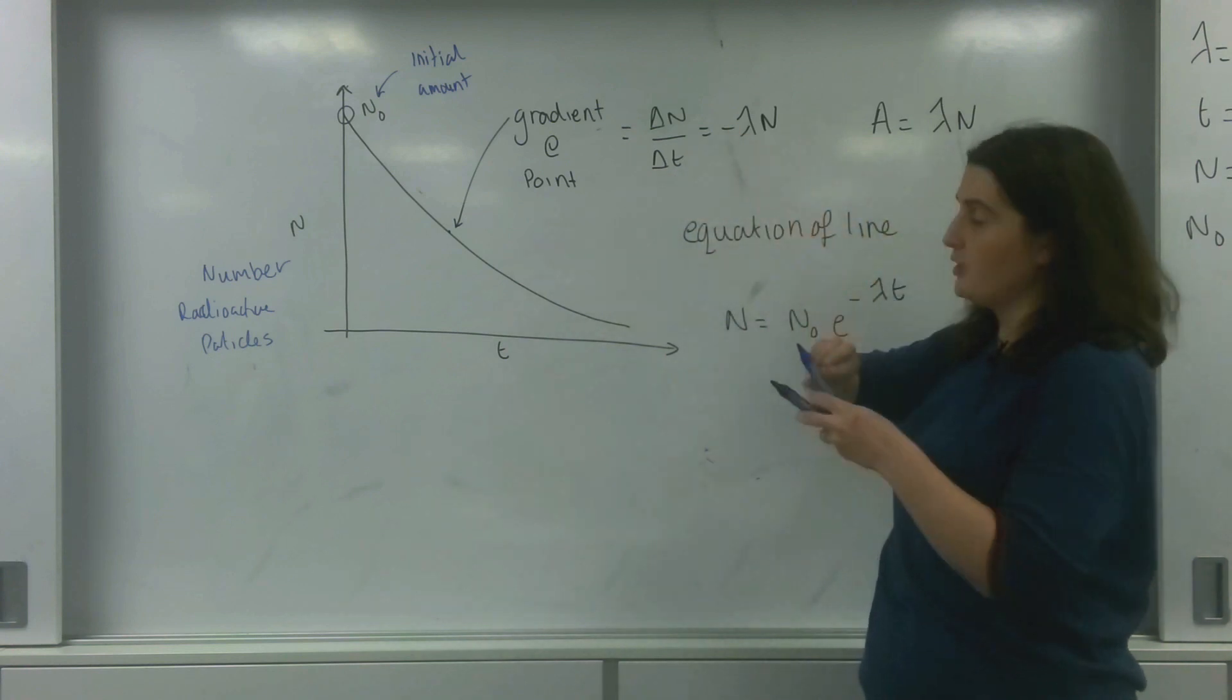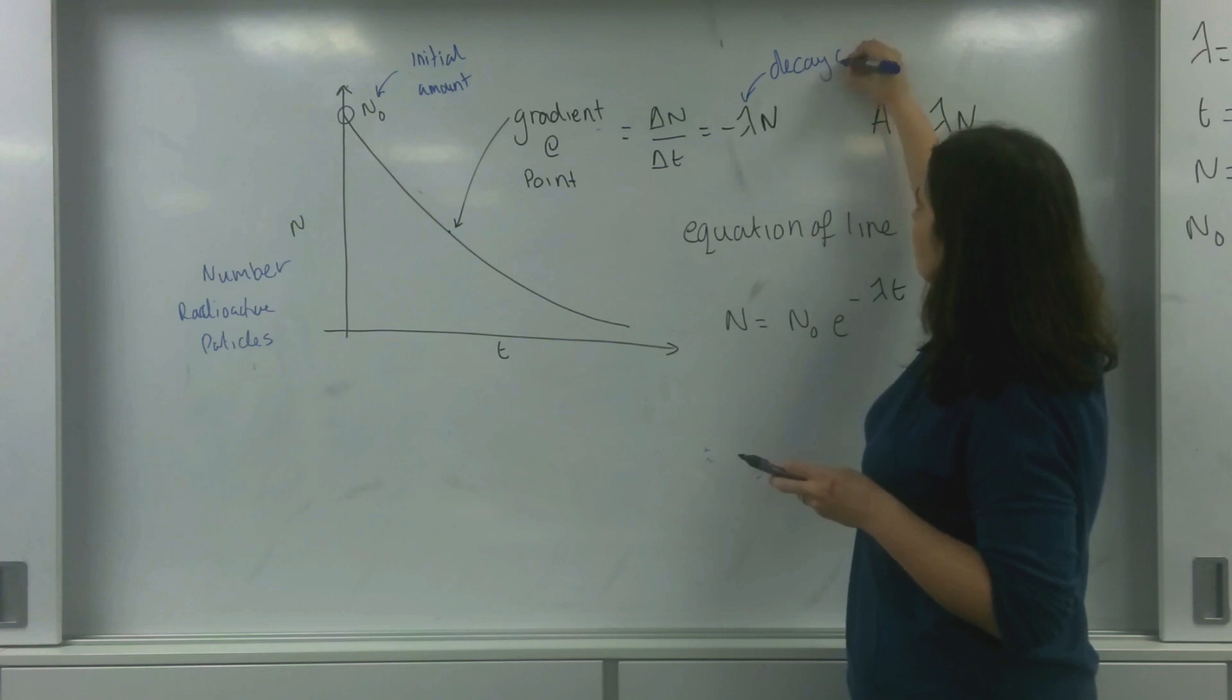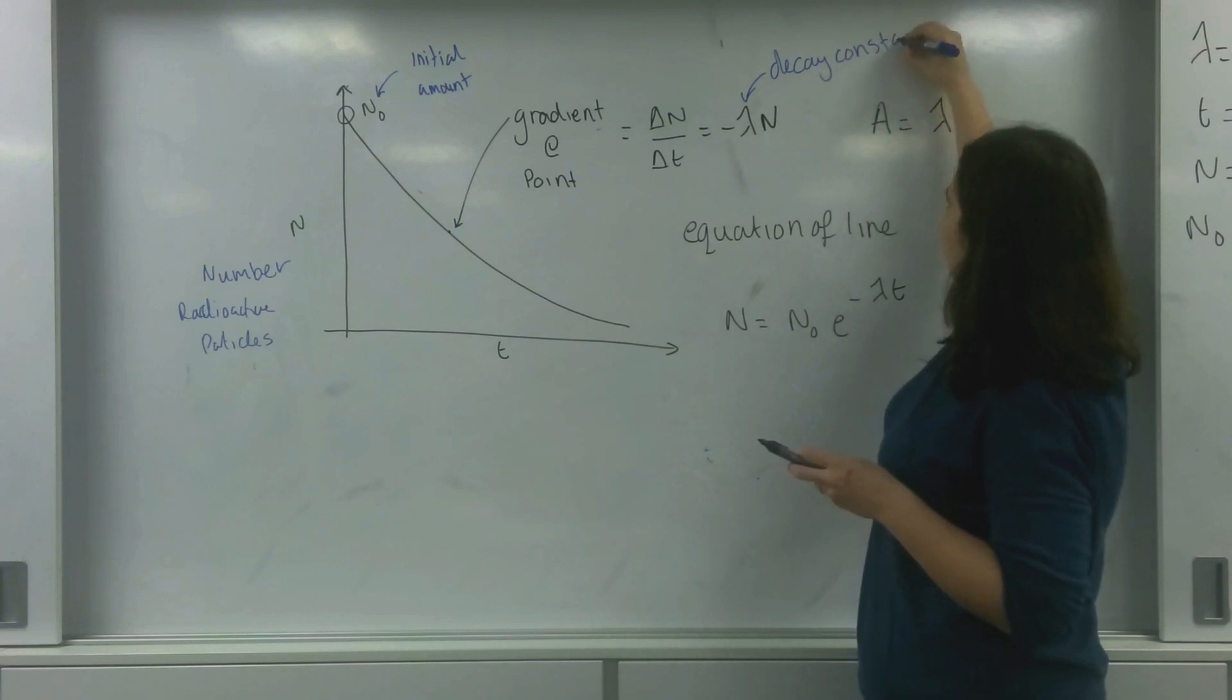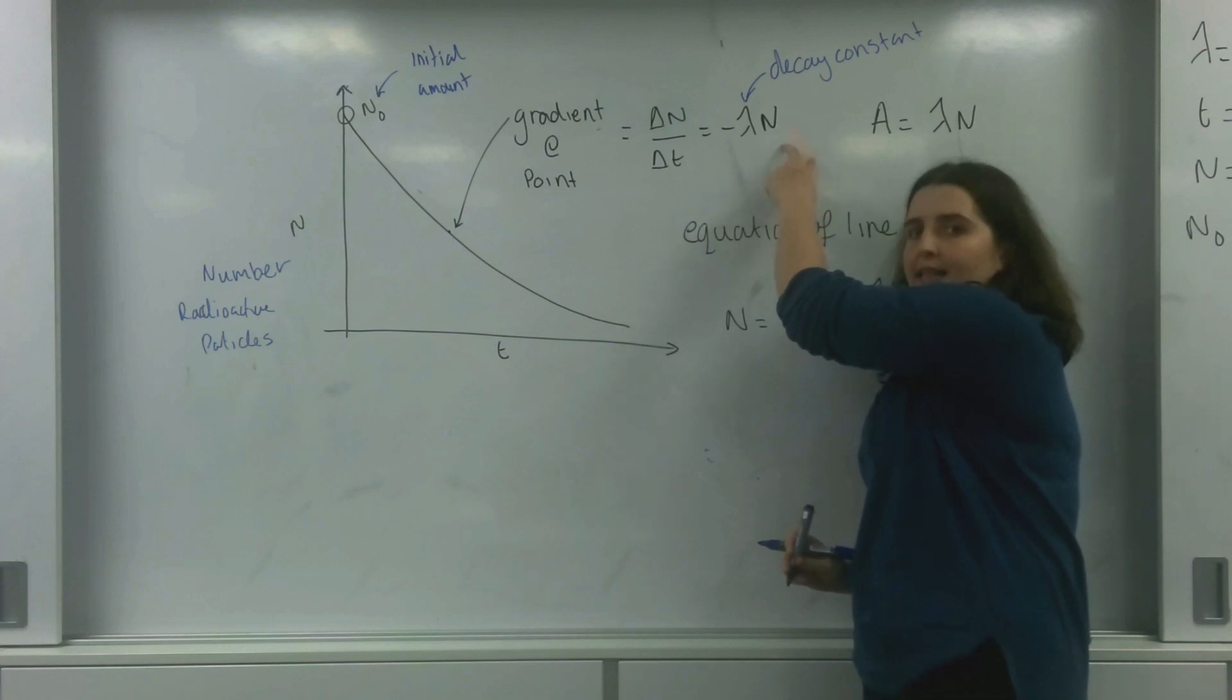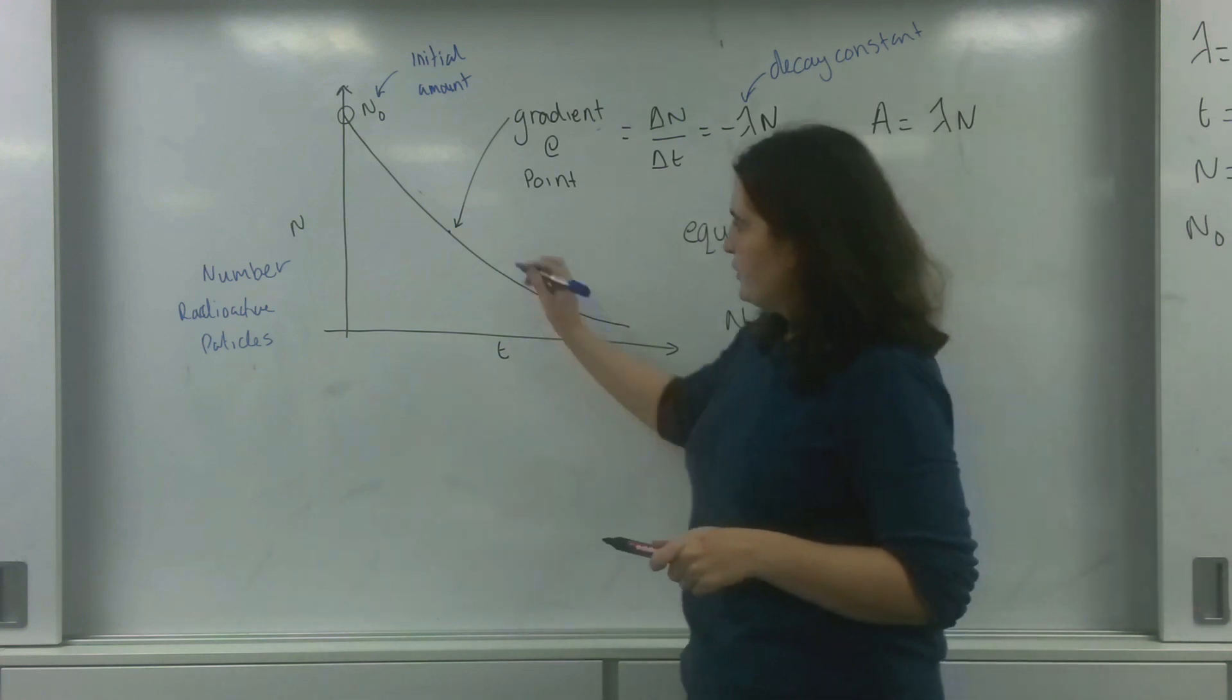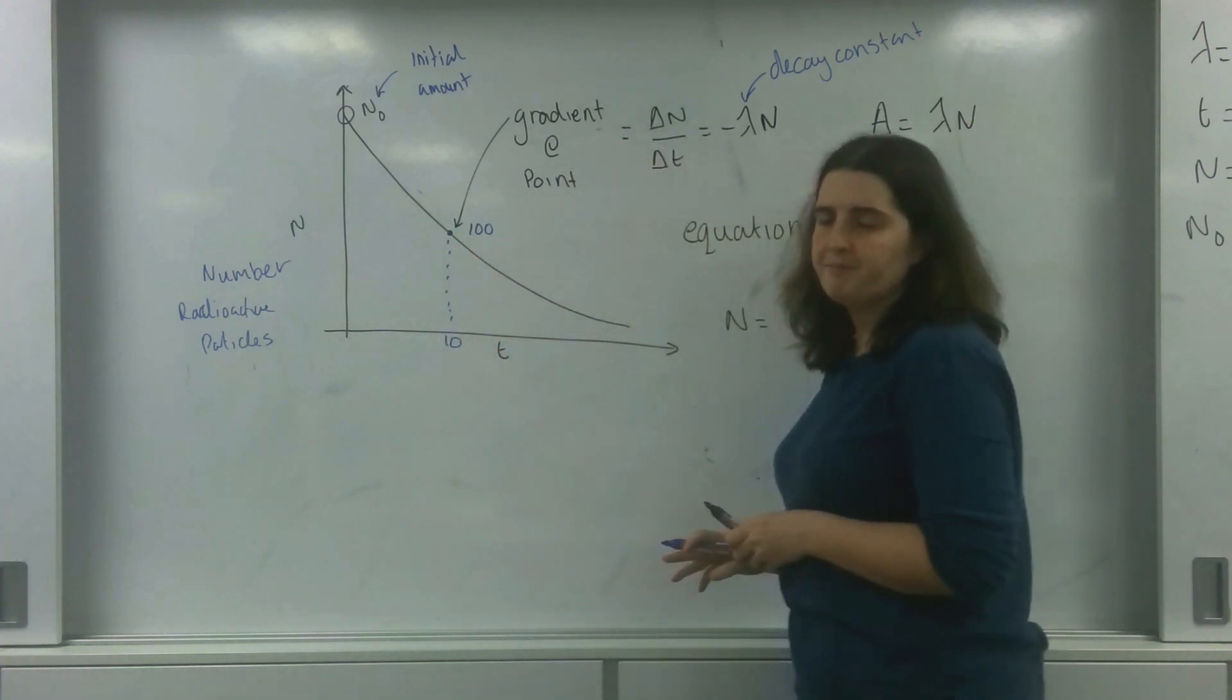is the decay constant. This decay constant times by the number of particles at that point. So at this point here was 100 particles. And this time was 10.